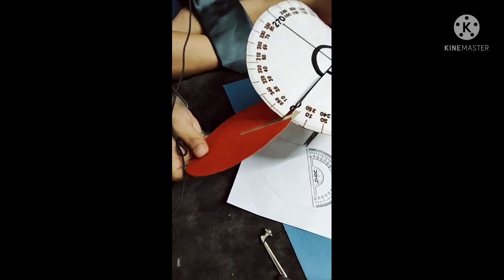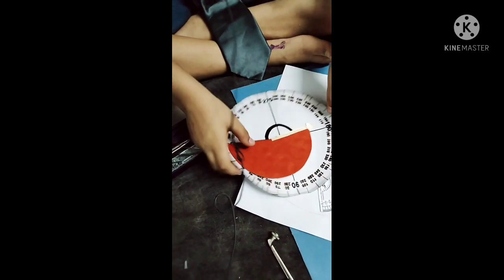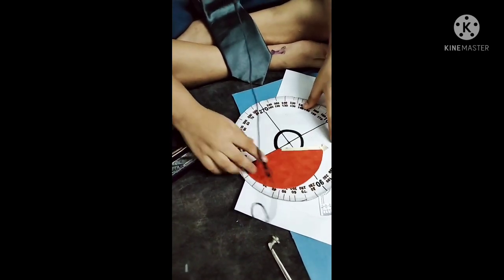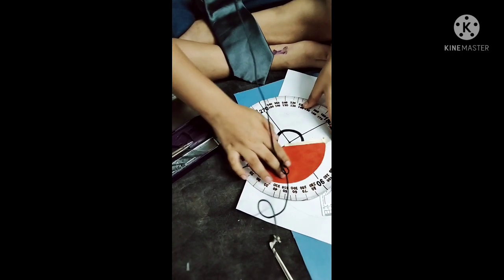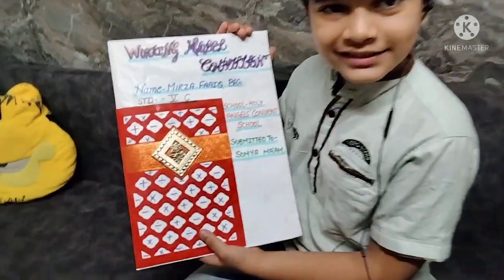Then join the circles like this. So look here, my working model is complete.